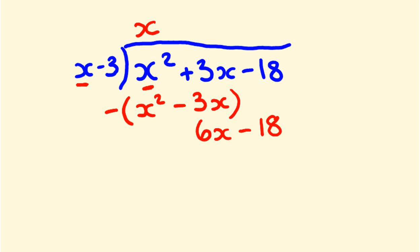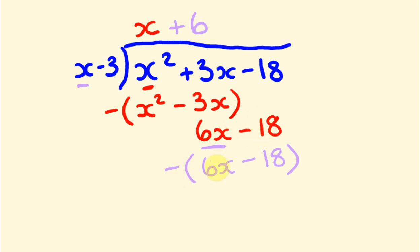Now we have 6x minus 18 left, still dividing by x minus 3. We ask: how many times does x go into 6x? It goes in 6 times. So 6 times x is 6x — they cancel out — and 6 times minus 3 is minus 18. We subtract: minus 18 minus minus 18 is minus 18 plus 18, which also cancels to zero. So x squared plus 3x minus 18 divided by x minus 3 equals x plus 6.